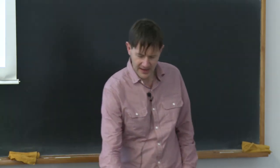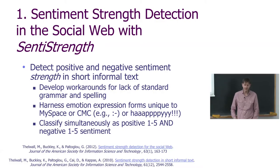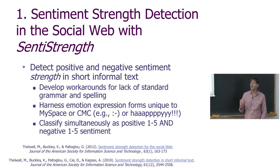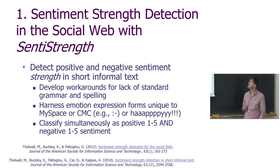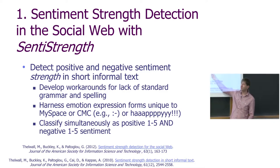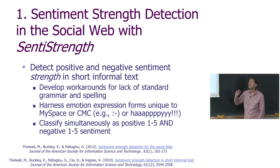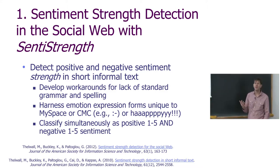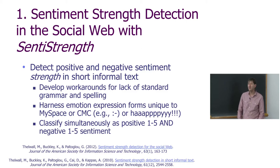It guesses how strongly positive and negative the sentiment is. It's designed for the strength of sentiment, so it doesn't just decide whether text is positive or negative, but it decides how positive and how negative the sentiment is. It classifies text simultaneously on a positive scale and a negative scale, so each text gets two scores — one for positivity and one for negativity. You could have a sentence which is both positive and negative, and even very short sentences can be both positive and negative in the social web.